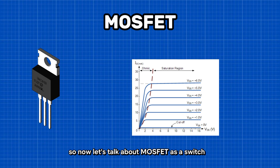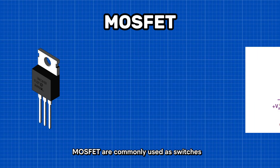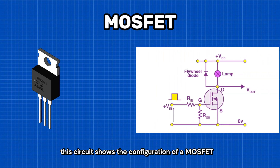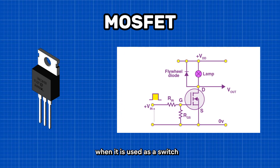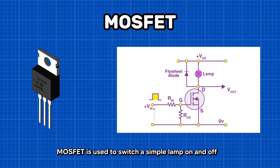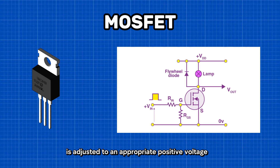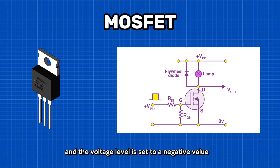Now let's talk about MOSFET as a switch. MOSFETs are commonly used as switches. This circuit shows the configuration of a MOSFET when it is used as a switch. In the circuit arrangement, an enhancement mode N-channel MOSFET is used to switch a simple lamp on and off. The input voltage VGS is adjusted to an appropriate positive voltage to switch on the device, and the voltage level is set to a negative value or zero to turn it off.